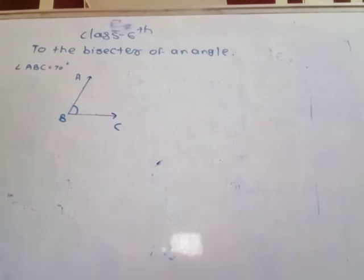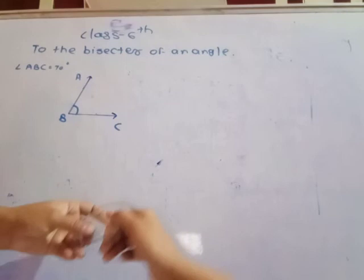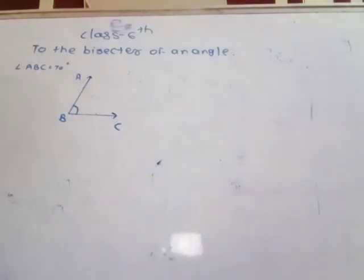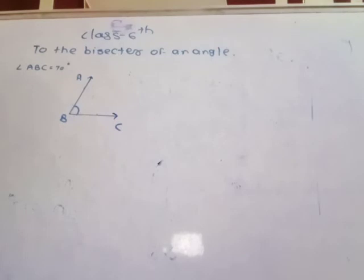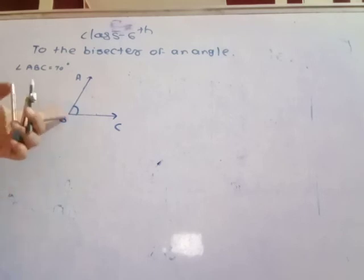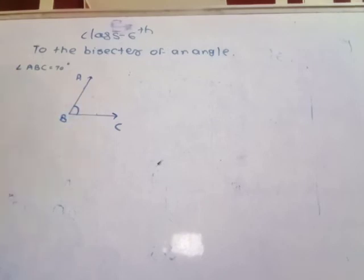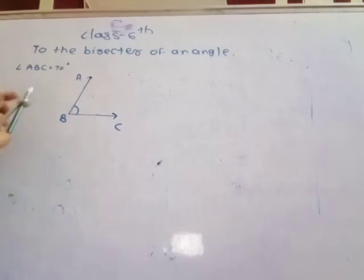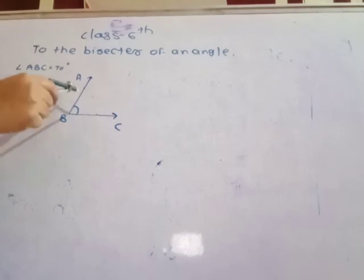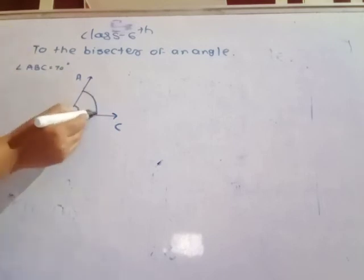Open the compass to any convenient radius and place the steel head on point B and draw an arc to intersect rays BA and BC. See this — open the compass to any convenient radius, place the steel head on point B, and draw an arc on rays BA and BC. Take the points and note the distance PQ.